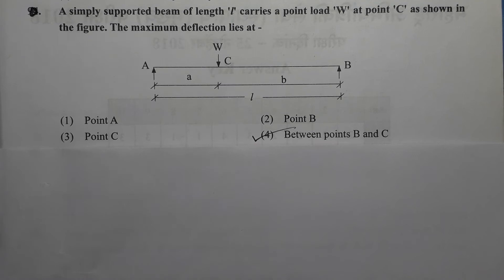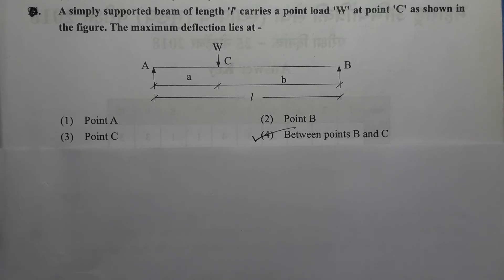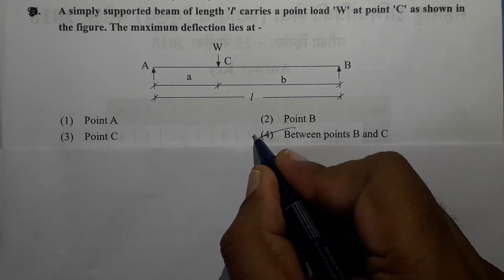Next question: A simply supported beam of length L carries a point load W at point C, as shown in the figure. The maximum deflection lies at? Here, AC equals small a and CB equals small b. We can see from the figure that b is greater than a. In such cases, the maximum deflection appears near the mid span. The midpoint is in part BC, and that is why maximum deflection is going to be between points B and C. The correct option is option number 4.